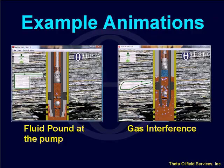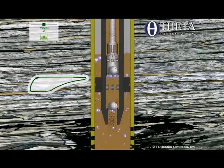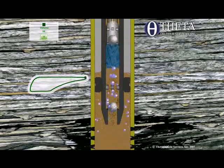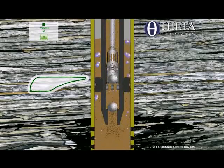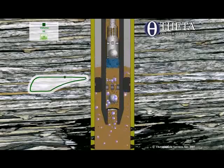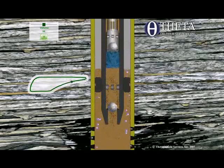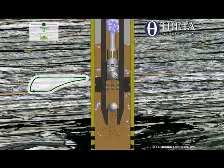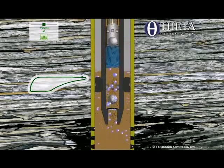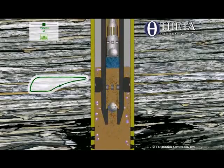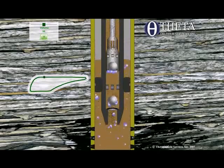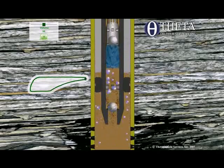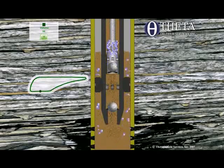Gas interference is a good one. When you have gas interference, a lot of gas goes through the pump and you have to compress that gas before the traveling valve can open. When you compress it, the gas will go through and then hit the fluid. At the beginning of the upstroke, you're expanding the gas — both valves are still closed. Then finally when you expand the gas enough to open the traveling valve and pick up the fluid load, you have a constant load for the rest of the upstroke. On the downstroke, you have to compress the gas in the pump before the traveling valve can open.